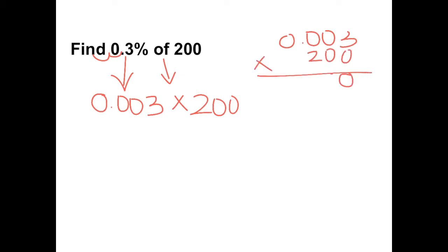We get 0.000. Add another 0, and then again zeros. Add 2 zeros. 3 times 2 gives us 6, and then the rest of the numbers are zeros. Now we can add.